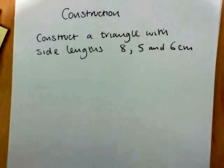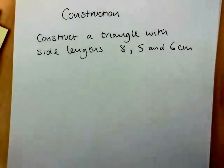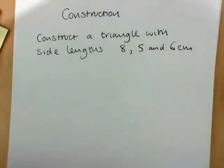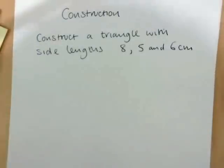So, construction. Construct a triangle with side lengths 8, 5 and 6 centimeters using a ruler and a pair of compasses.